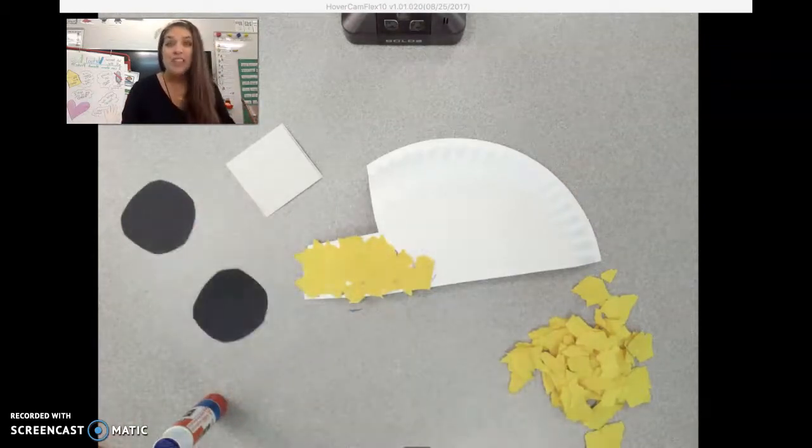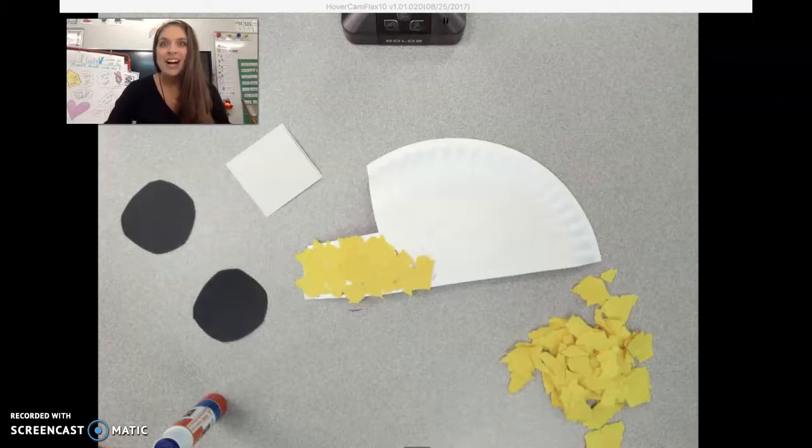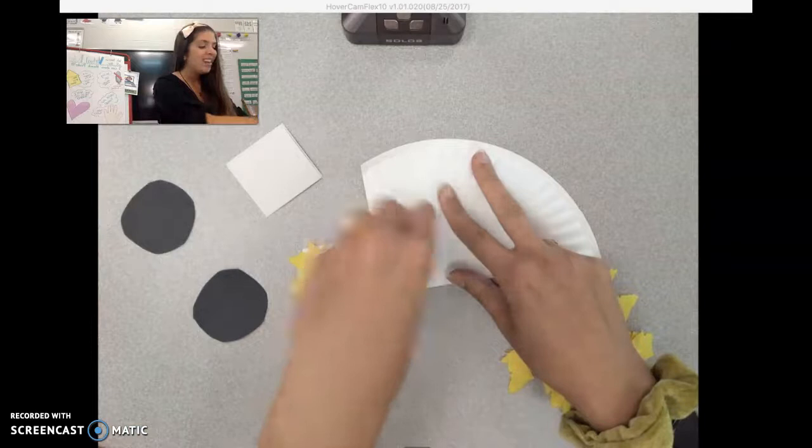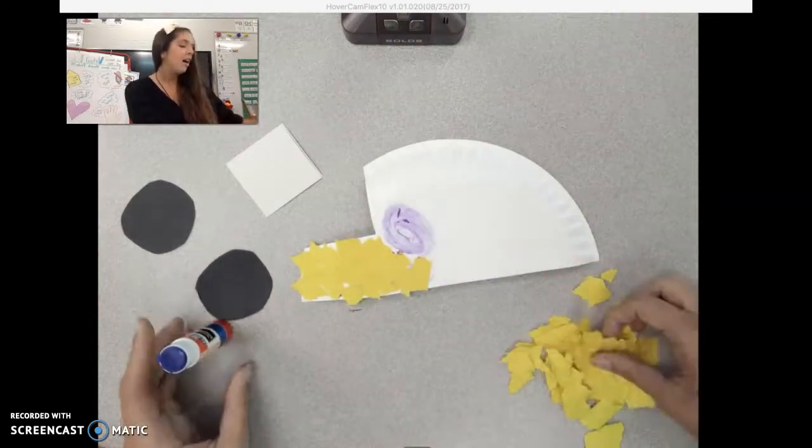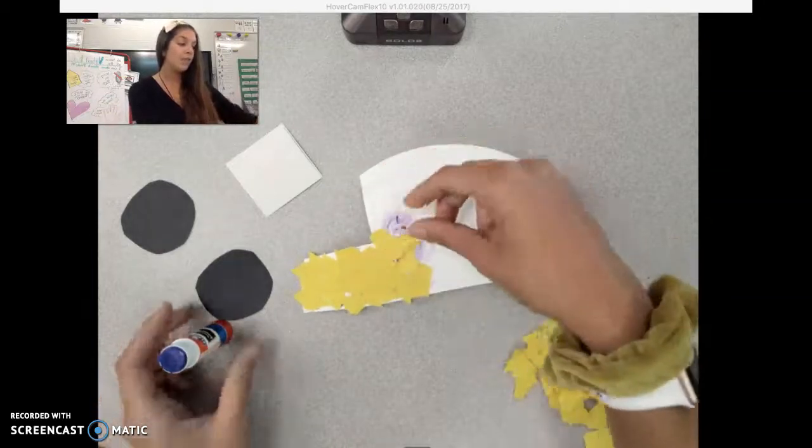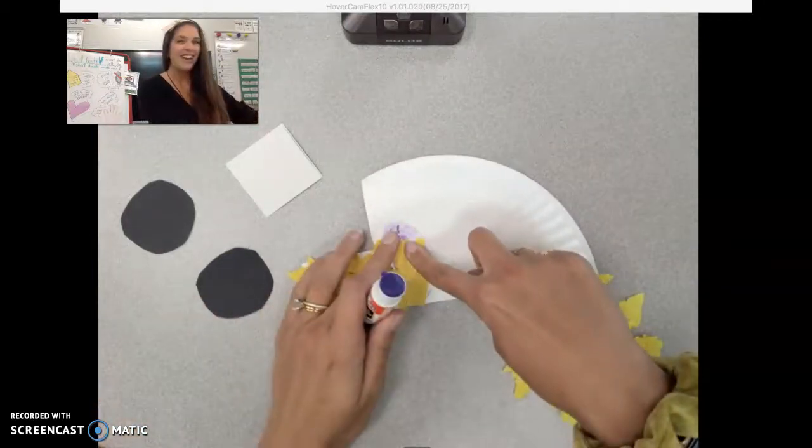They aren't the same shape and that is okay. We are practicing using our scissors and cutting, so it is not going to be perfect and that is okay. For this school bus, the wheels don't have to be perfectly round and that's okay.